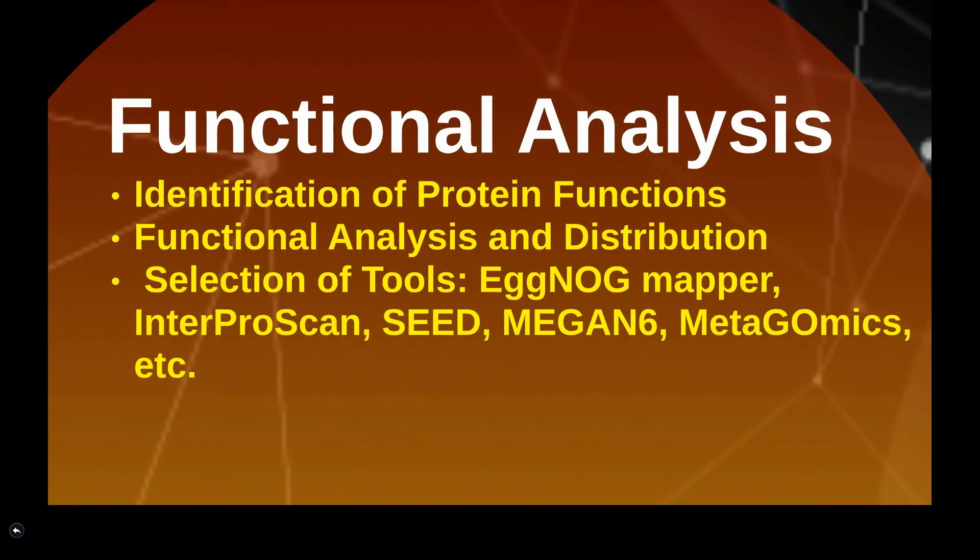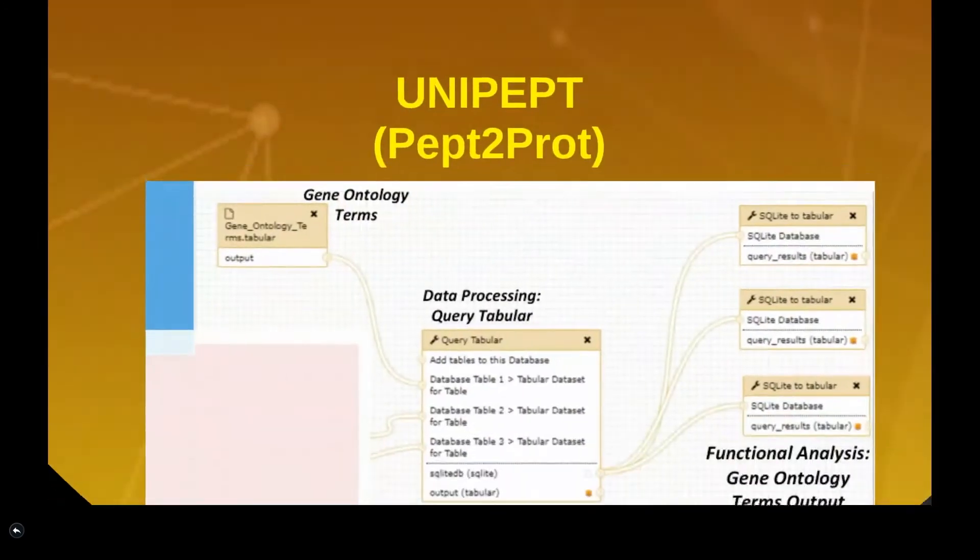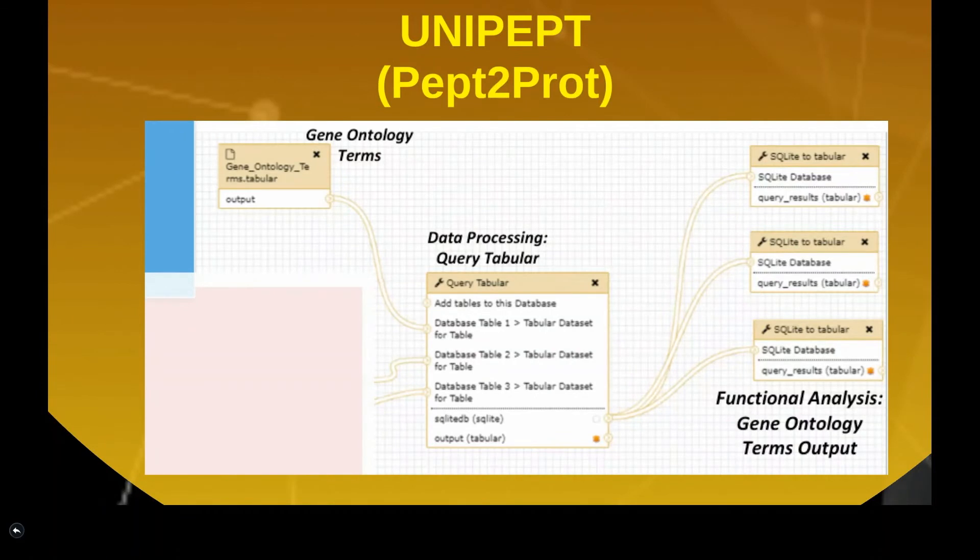The next step is functional analysis. Although there are many tools for functional annotation and visualization, our community-based efforts concentrated on utilizing the UNIPEPT tool and its pept2prot function, which maps identified peptide sequences to proteins.